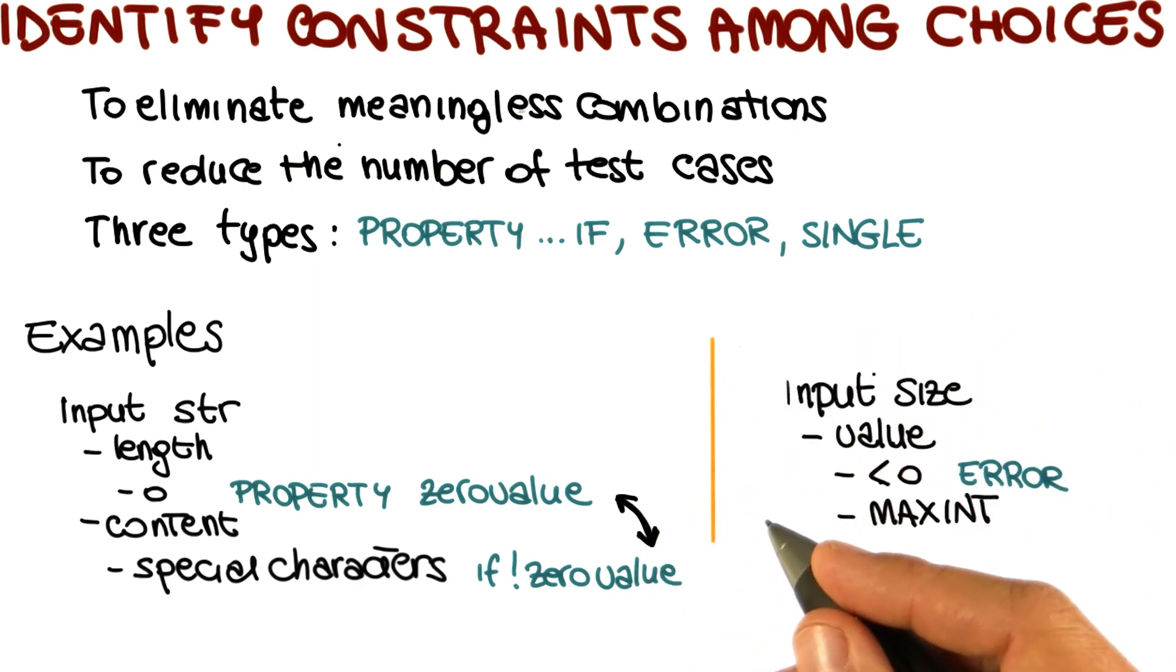cuts down dramatically the number of test cases. We might use, for instance, the single property for maxint, which means we will only have one test case in which the size is equal to maxint.